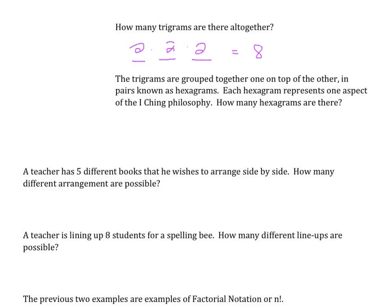The trigrams are grouped one on top of another in pairs, known as hexagrams. Each hexagram represents one aspect of the I Ching philosophy. Since they come in pairs and each has eight options, we have eight times eight, giving a total of 64 hexagrams possible.